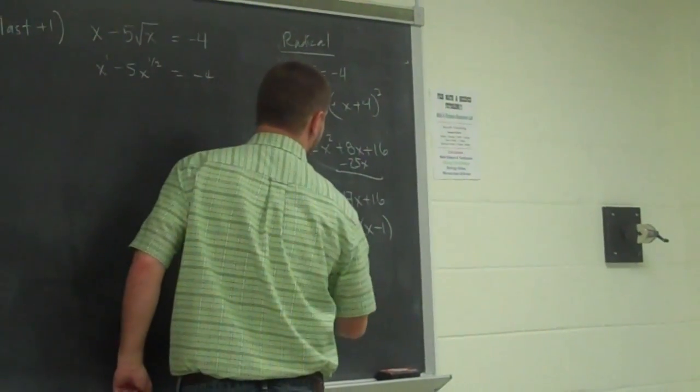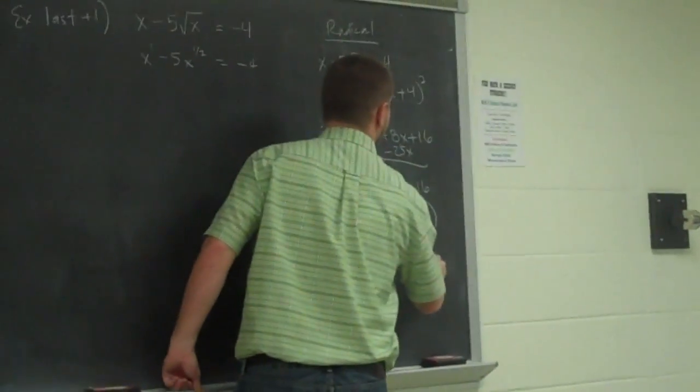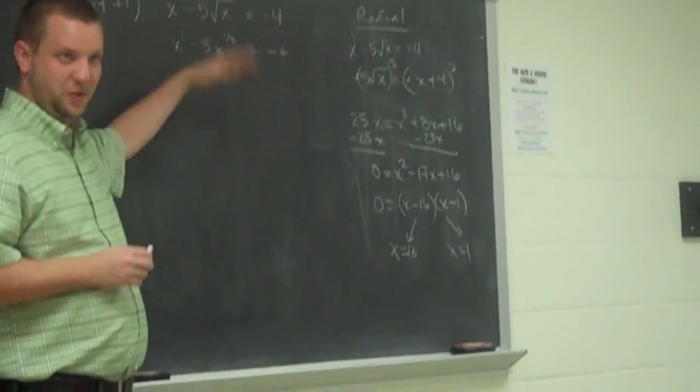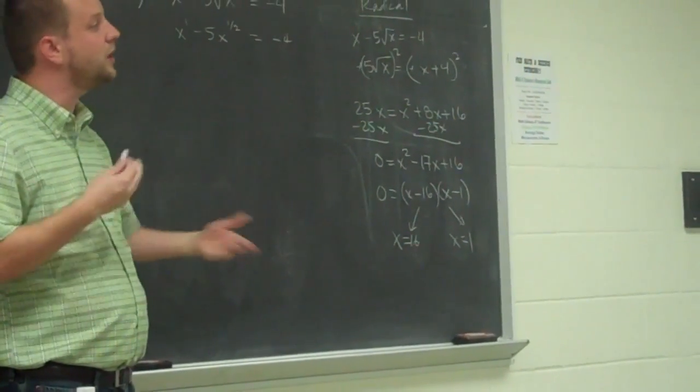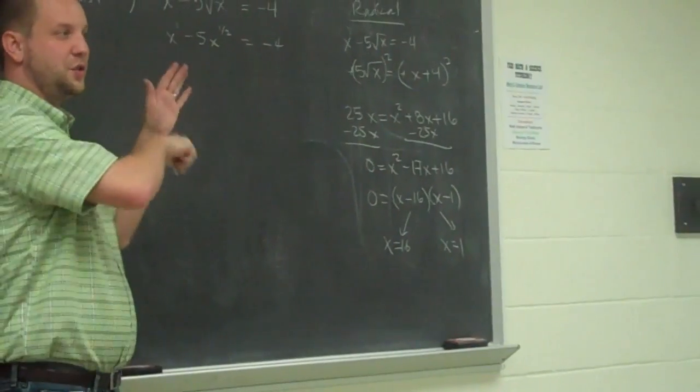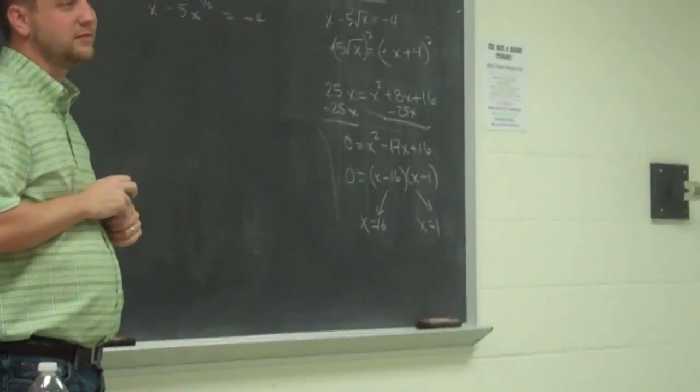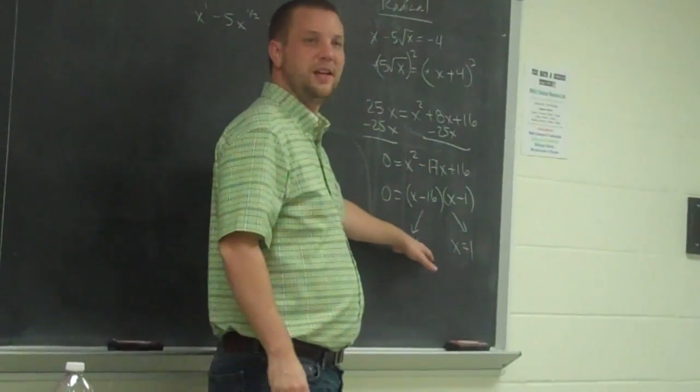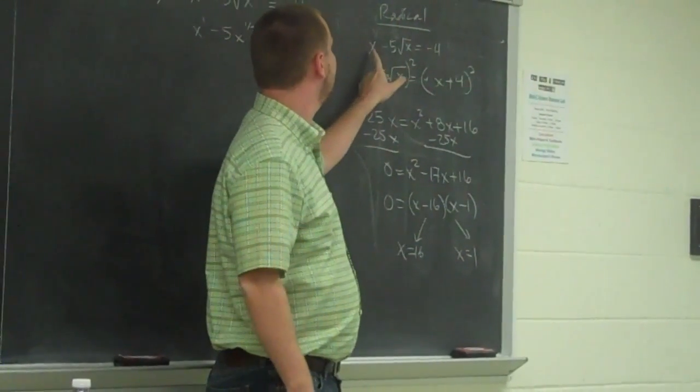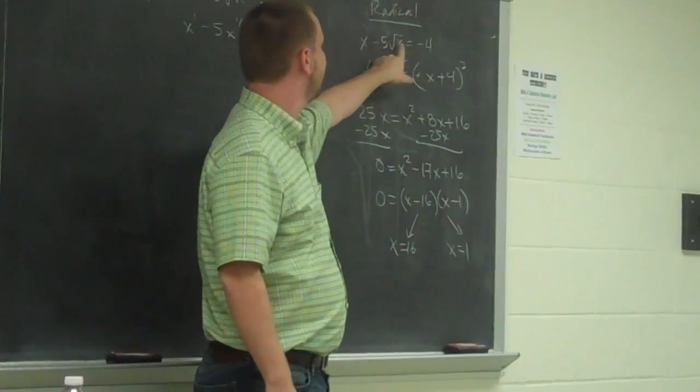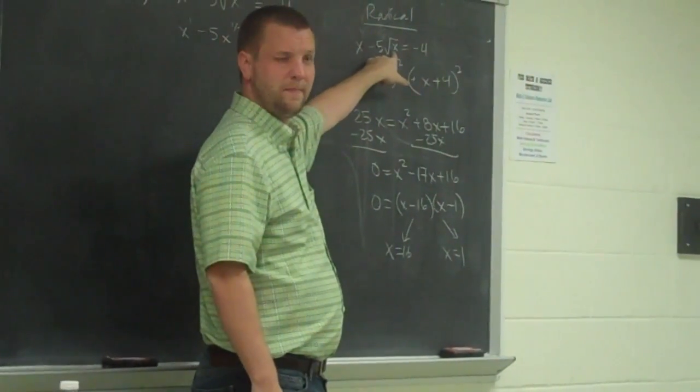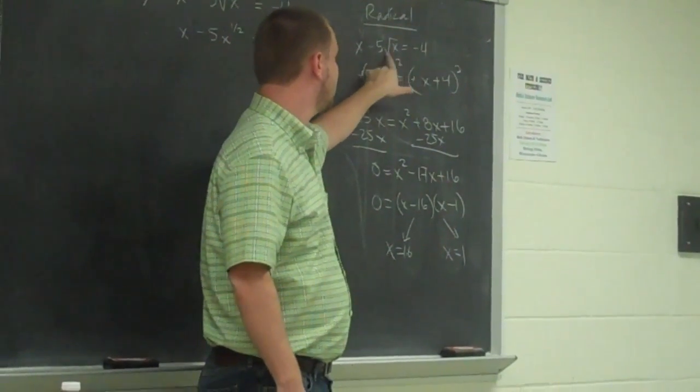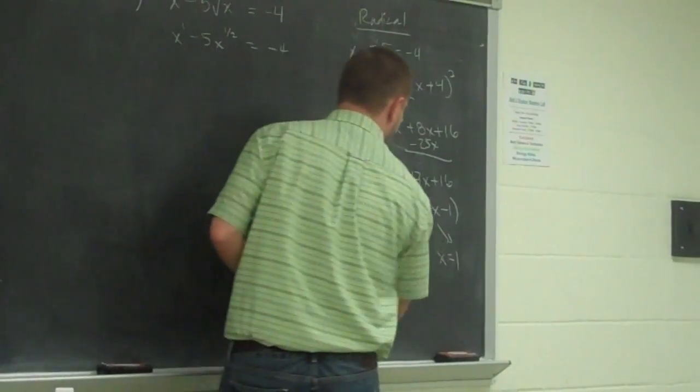From which we potentially get x equals 16 or x equals positive 1. And I don't have room to check them both, but we're going to check them together and find out which one's working. Is everyone fine with that? You all understand that on the test you would actually write out the checking, right? Yeah, okay. So if I take 16 and actually plug it in, this is going to be 16 minus whatever that is. The square root of 16 is 4. And 5 times 4 is 20. And is 16 minus 20 negative 4? Yeah, so the 16 works.